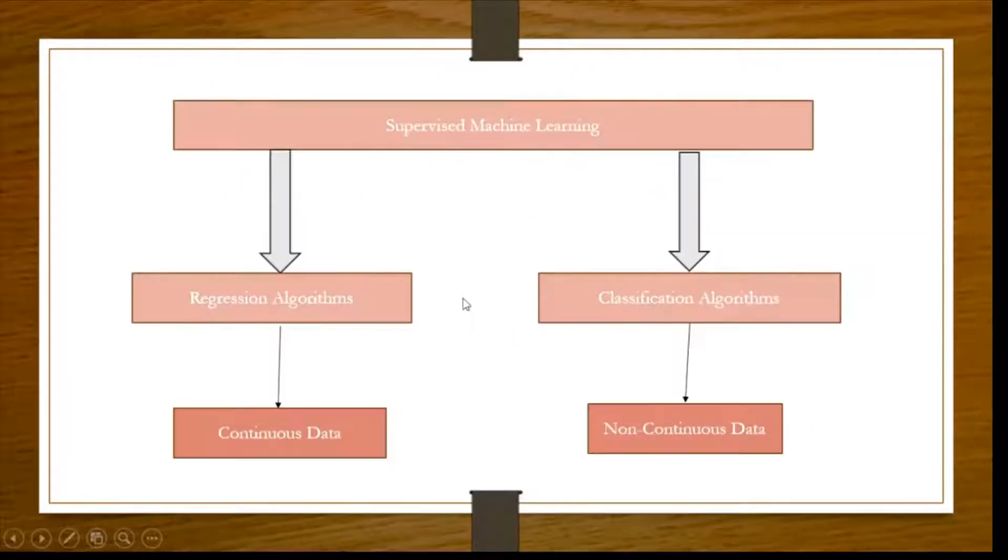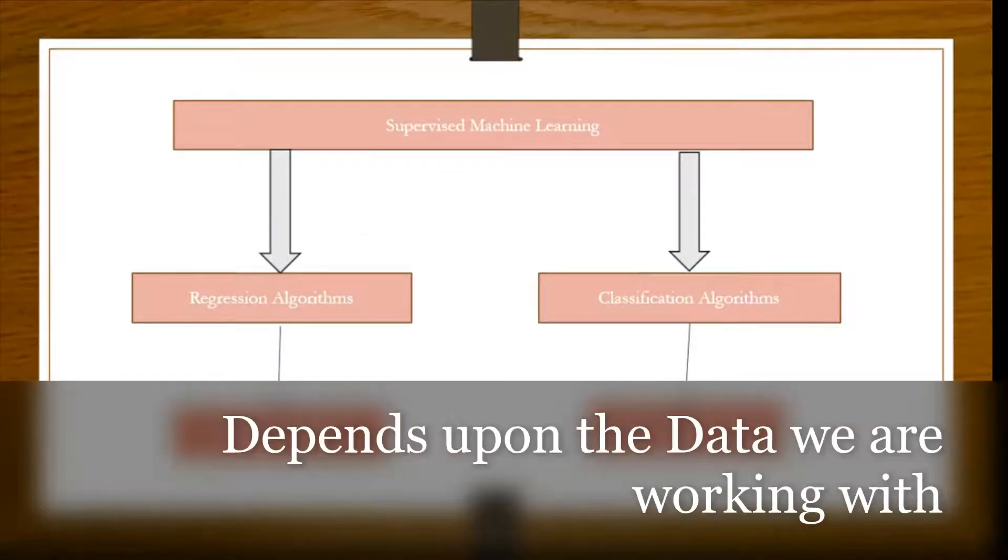So where do these classification algorithms fall into? This falls in supervised machine learning. Supervised machine learning has basically two types of algorithms. You can solve the problems of supervised machine learning with either regression or classification. This totally depends upon the data we have. So let's first understand supervised machine learning.